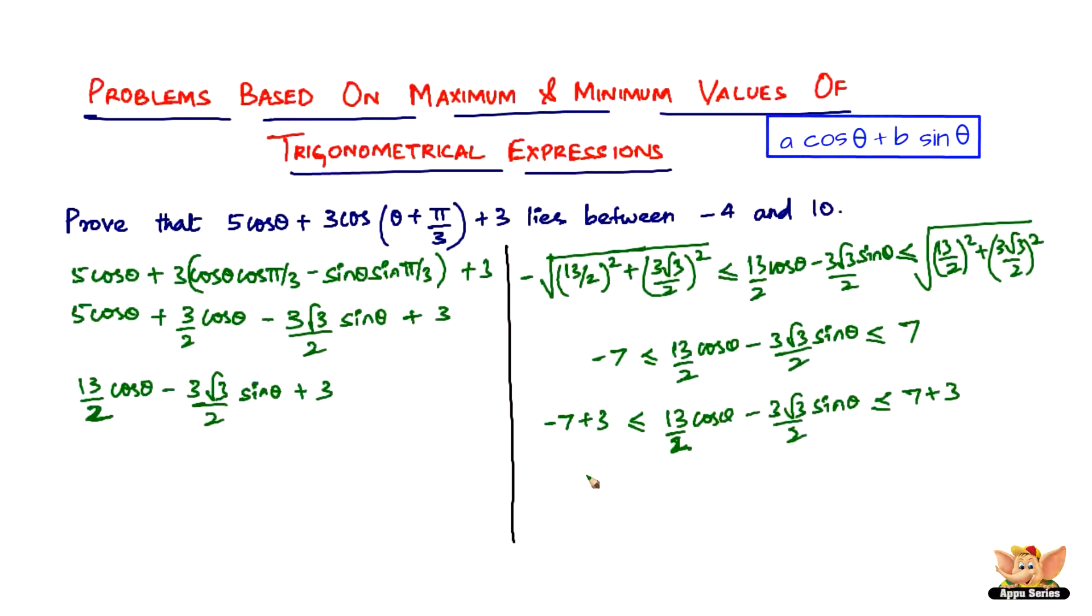So that makes it what? Minus 7 plus 3 is minus 4, less than or equal to 13/2 cos θ minus 3√3/2 sin θ, which is lesser than or equal to 10. So we proved that this lies between minus 4 and 10.